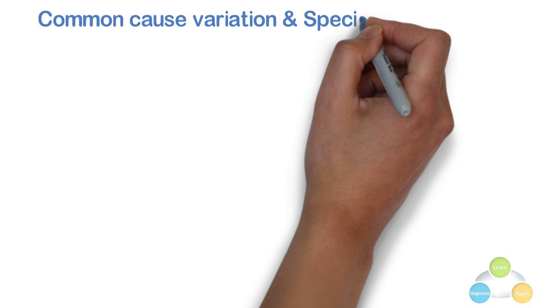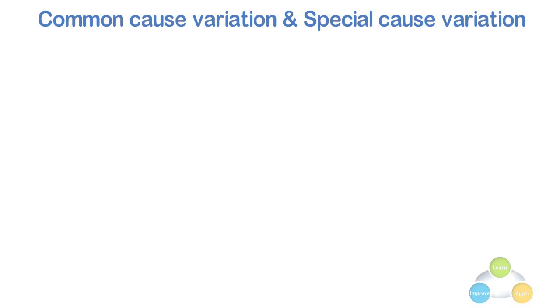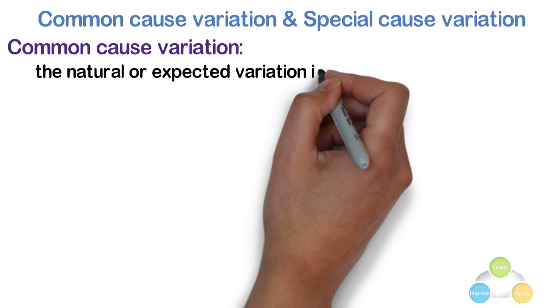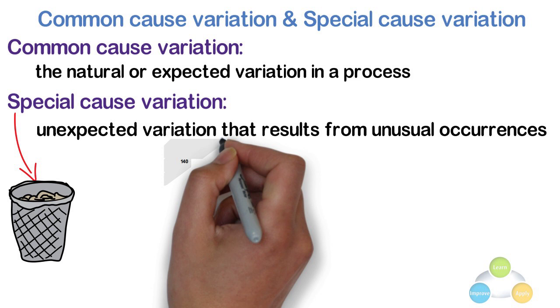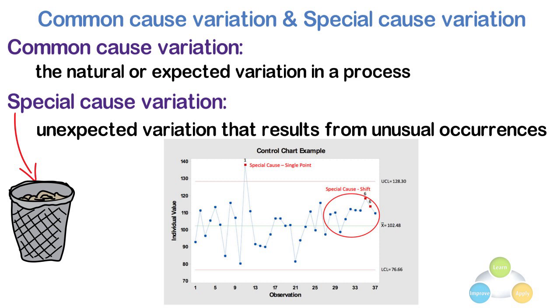Common Cause Variation and Special Cause Variation. Some degree of variation will naturally occur in any processes. Common Cause Variation is a natural or expected variation in a process. Special Cause Variation is an unexpected variation that results from unusual occurrences. It is important to identify and try to eliminate Special Cause Variation. Out of control points and non-random patterns on a control chart indicate the presence of Special Cause Variation. Let's take an example.